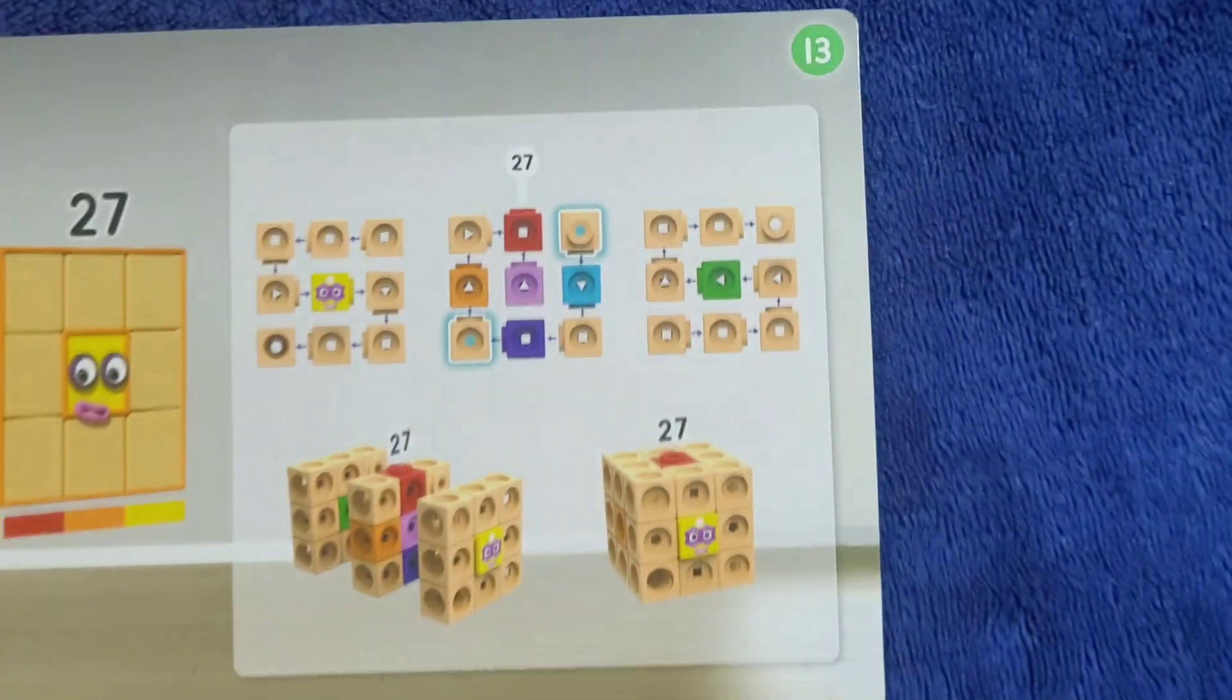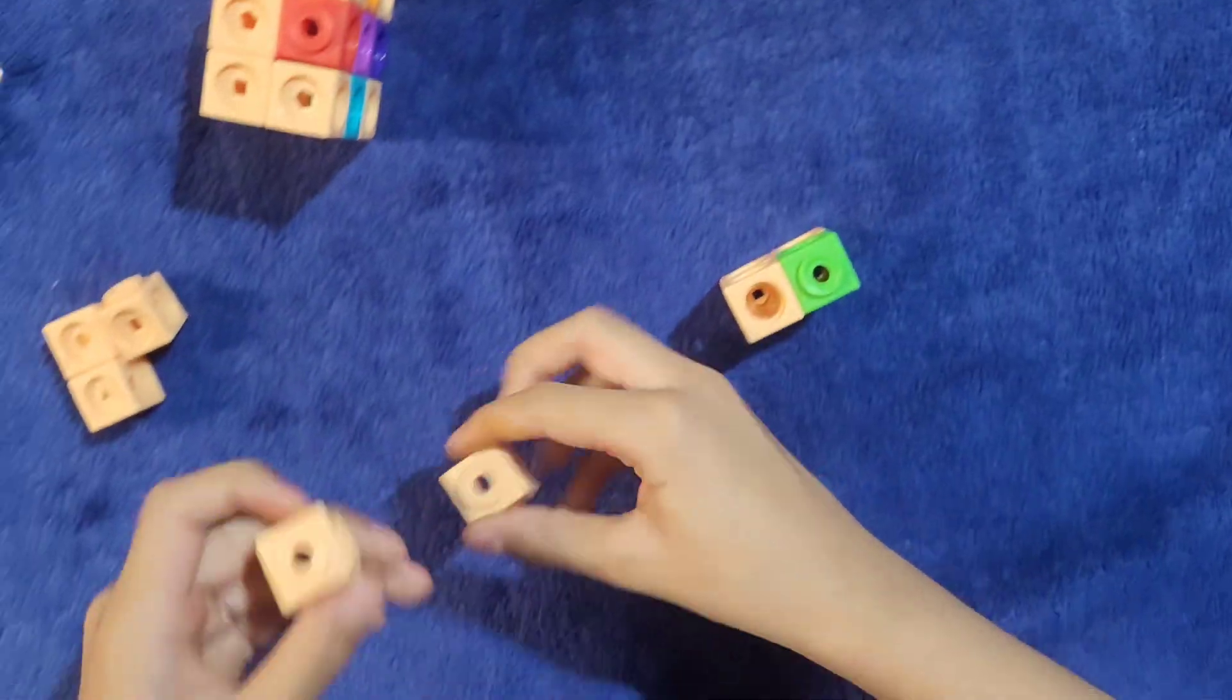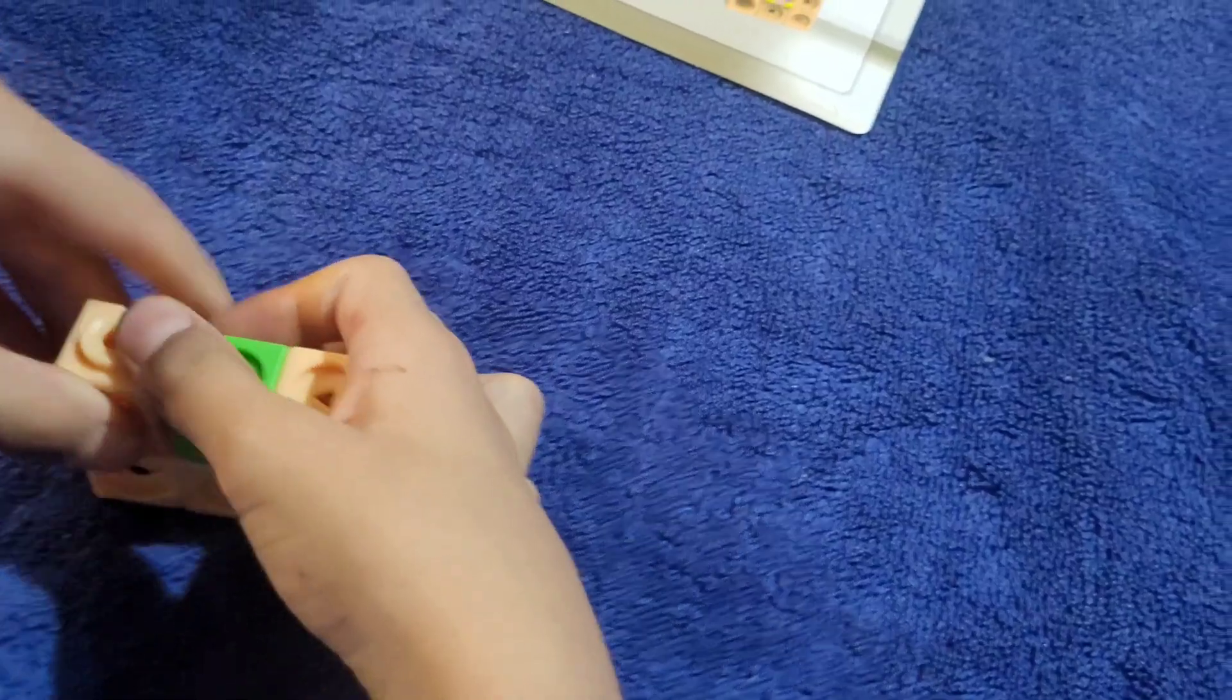Yeah, the answer was 64. 4 times 4 times 4 equals 64. 3 times 3 times 3 equals 27.